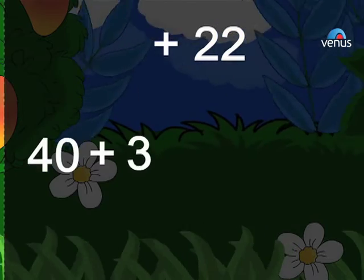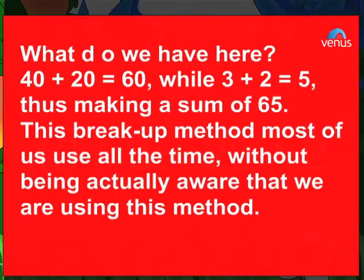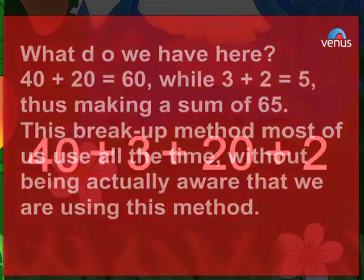40 plus 3 plus 20 plus 2. What do we have here? 40 plus 20 equals 60, while 3 plus 2 equals 5, thus making the sum 65. This breakup method most of us use all the time without actually being aware that we are using this method.